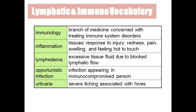Lymphedema is an excessive amount of tissue fluid due to blockage of lymphatic flow. You can see this in elephantiasis — there is blockage of tissue fluid because of some obstruction in the lymphatic vessels, so the tissue fluid stays in the tissues itself, leading to enlargement of that part. Opportunistic infection is an infection appearing in an immunocompromised person, such as in an AIDS patient.